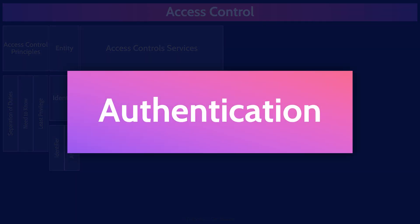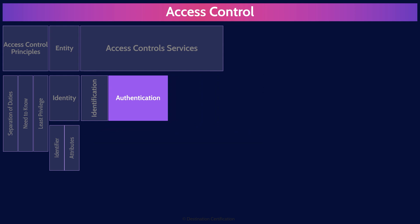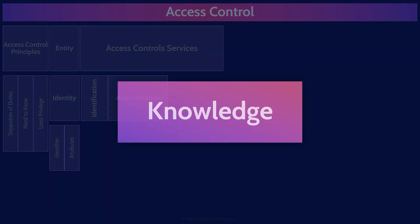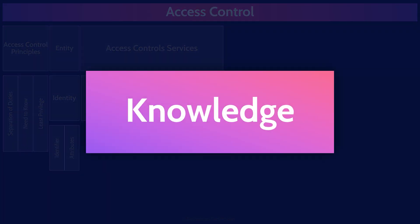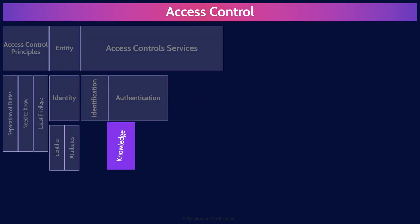Authentication is where the system verifies the user's identity via one of the three factors of authentication: knowledge, ownership, or characteristic. Authentication by knowledge, also often referred to as something you know, is where users prove who they say they are by providing some information that they have memorized, like their password or a security question.